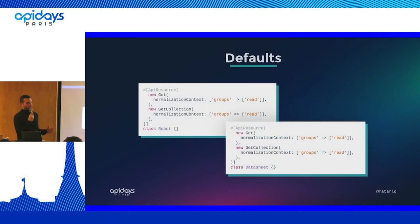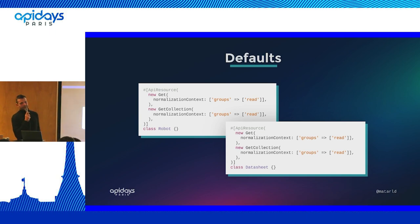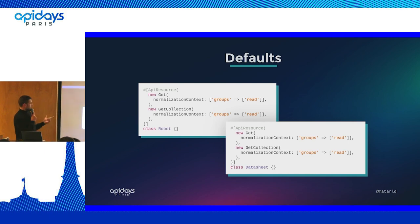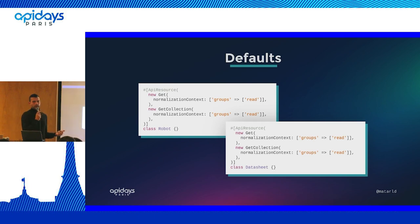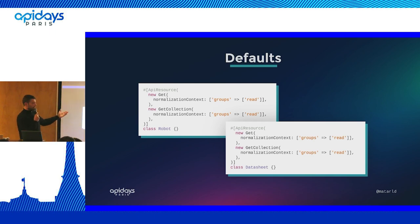Until now we've worked with a single resource, but most APIs have multiple resources. Here we have a robot resource and a data sheet resource. We can naively write item and list operations with a read group for each, but we're repeating ourselves for each operation and each resource. One easy improvement is to move the normalization context directly into the resource definition since it's the same across operations.